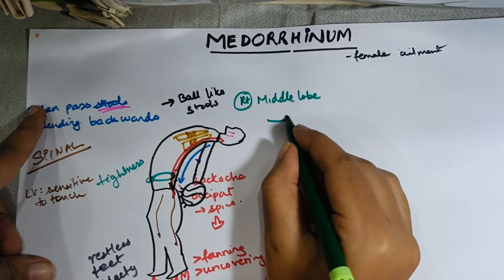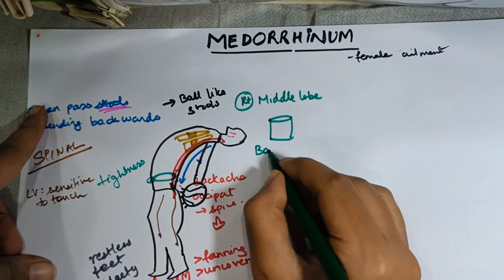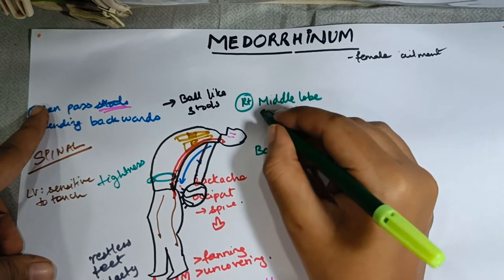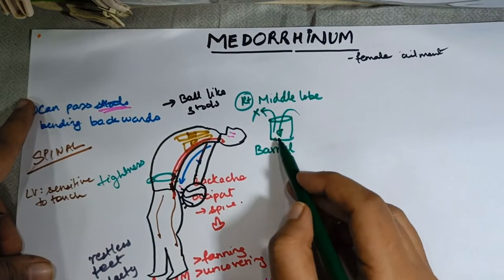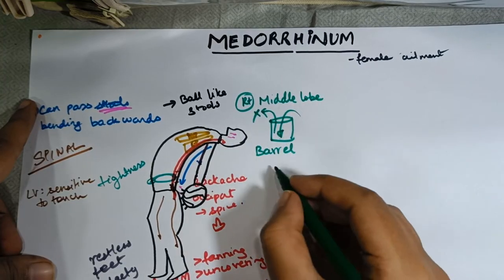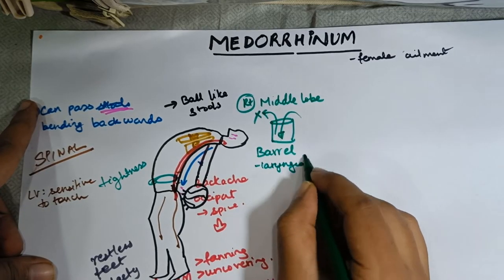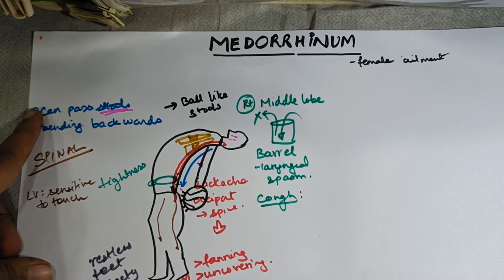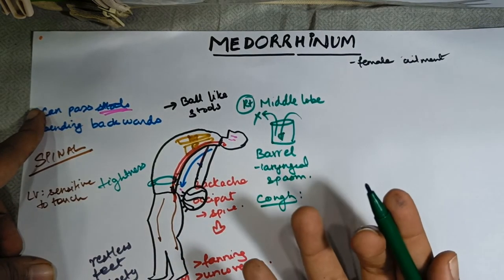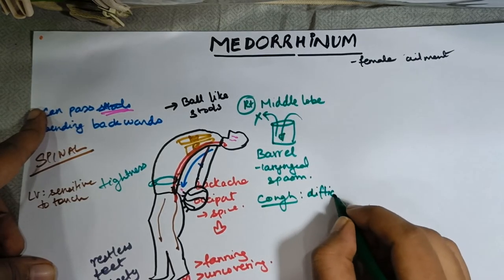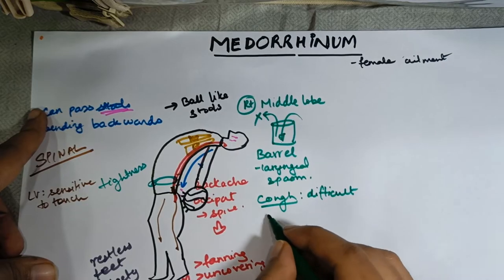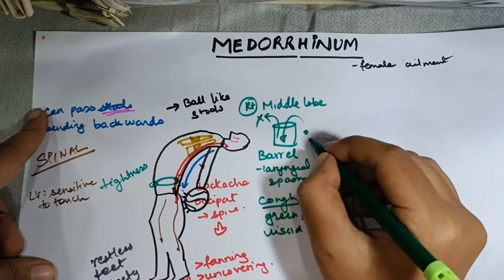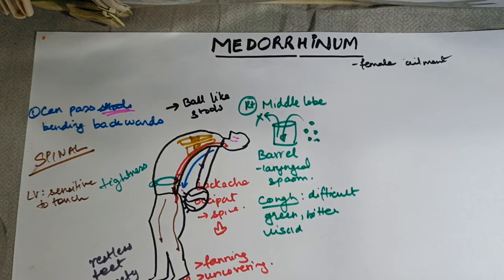It is as if coughing in a barrel — because the person can inspire air in easily, but expiration is difficult. Inspiration is easy, but expiration is difficult. There is laryngeal and epiglottis spasm. Regarding cough, I've taken the green pen — the sputum is difficult to raise, green, bitter, whisked, and it comes out like balls.